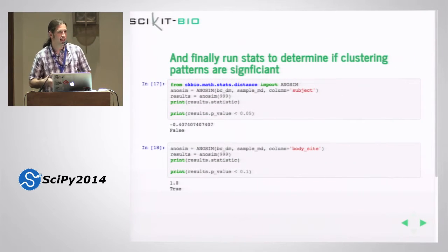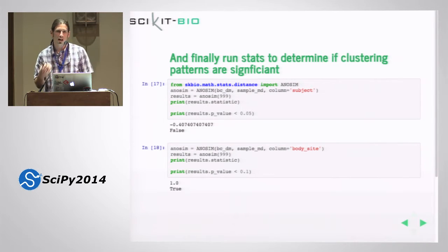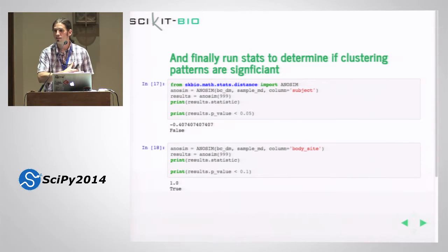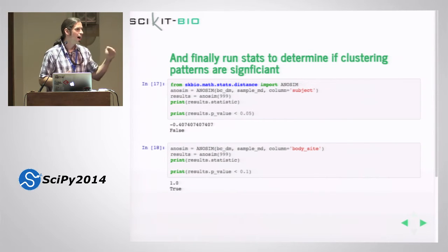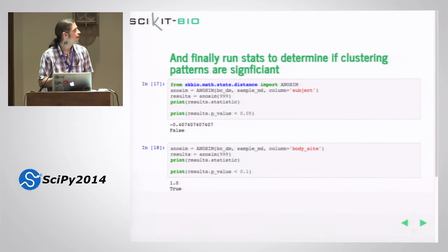The QIIME workflow doesn't end there — we just did some visual inspection of these results, but the next thing you'd want to do is statistical analysis. Using scikit-bio's ANOSIM functionality, we can do statistics to see whether there's significant clustering by subject, and we find that there's not. We can then do that by body site and find that there is clustering by body site. Essentially what these steps have allowed us to do is recreate this entire QIIME workflow in about 10 API calls — much easier than the original QIIME workflow, enabling very powerful, flexible bioinformatics pipelines.